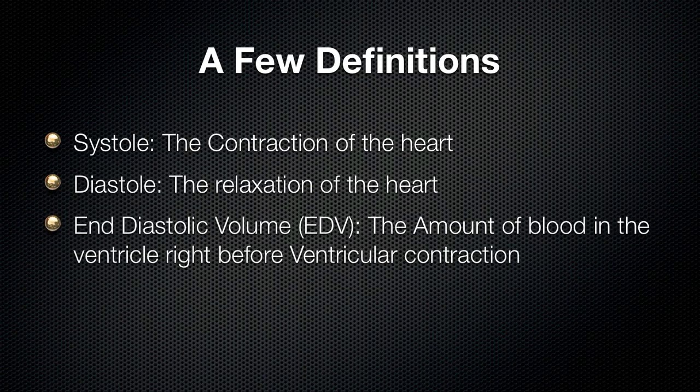Then we have the end diastolic volume, or the EDV, which is the amount of blood in the ventricle right before ventricular contraction. So right before the ventricle contracts, the amount of blood that we have in the ventricle, we call that the end diastolic volume — which makes sense, because it's right at the end of diastole.